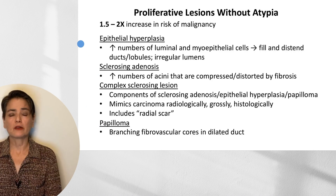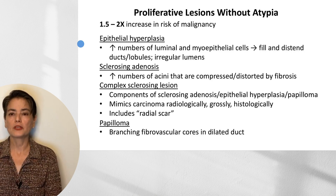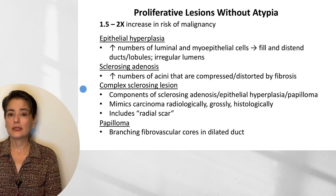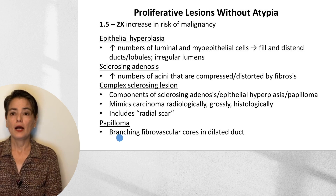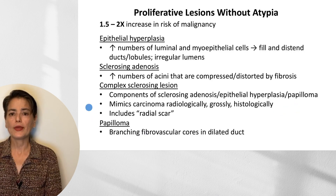In epithelial hyperplasia, you have increased numbers of luminal and myoepithelial cells — both cell types — filling and distending the ducts and lobules, characterized by irregular lumens. In sclerosing adenosis, we have an increased number of acini, but in contrast to regular adenosis, they are compressed and distorted by fibrosis. Complex sclerosing lesion is quite complex — it can have components of sclerosing adenosis, epithelial hyperplasia, and papilloma, and it can mimic a carcinoma radiologically on mammogram due to its stellate appearance, and even histologically. Within this category is a lesion called radial scar.